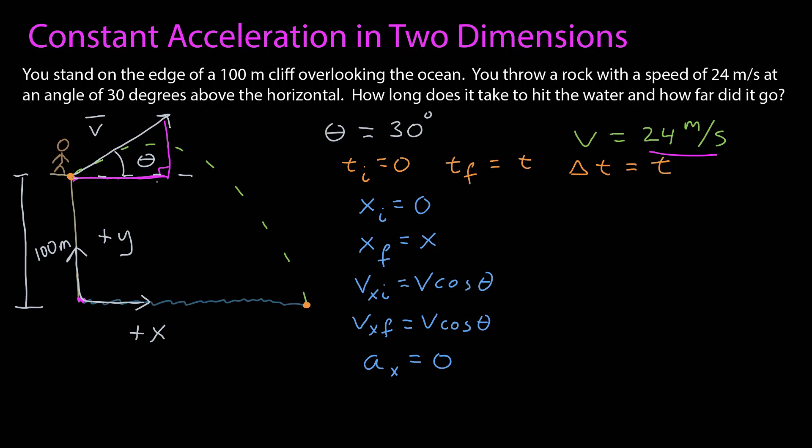So what do I know about what's happening in the y dimension? What's my initial y position? Well, that's 100 meters, given the coordinate system where the zero is down at the ocean. What's the final y position? Well, that's when it hits the ocean. So y final is equal to zero. Do I know my y component of the initial velocity? And I do for the same reason I knew the x component. It's going to be the length of this side of a right triangle, where the magnitude is 24 meters per second. And so it will be the speed times sine theta.